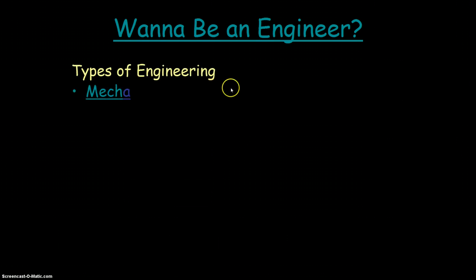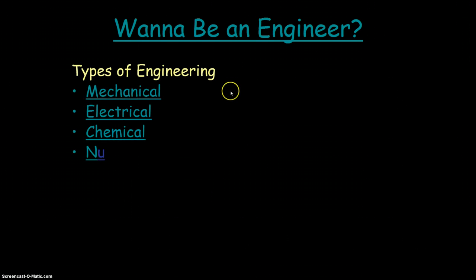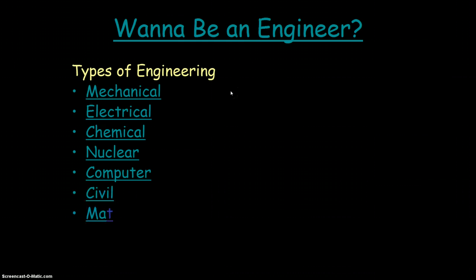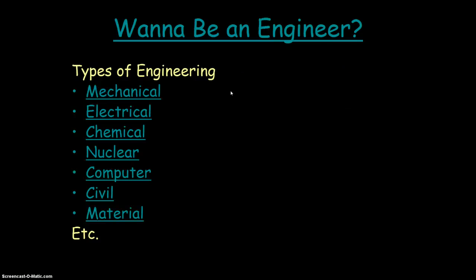If you want to be an engineer, there are all different kinds of engineering. Shown here are just a few: mechanical, electrical, chemical, nuclear, computer, civil, material — and there are a whole lot more. These are just a few of them.